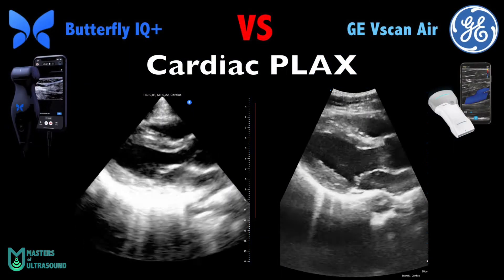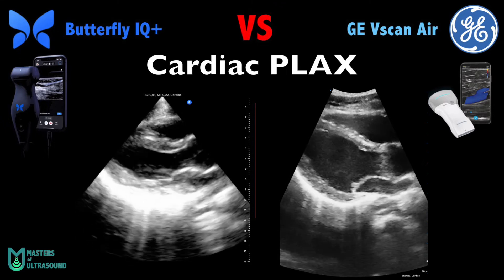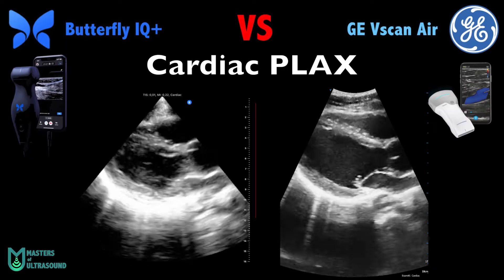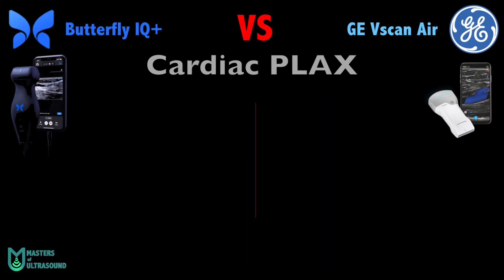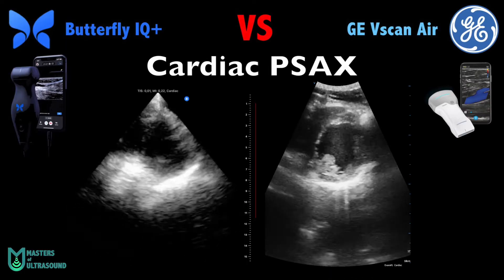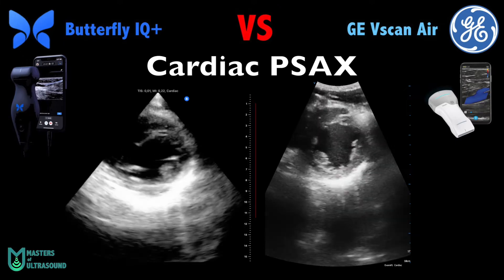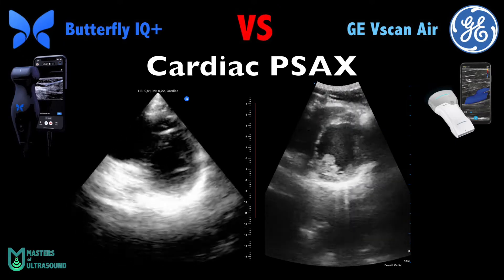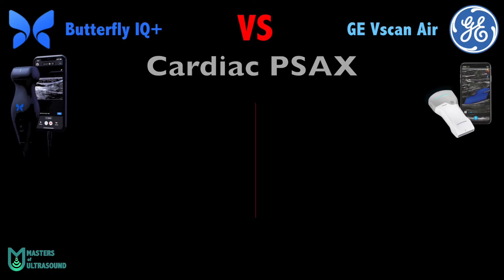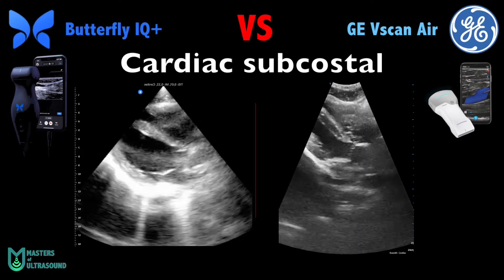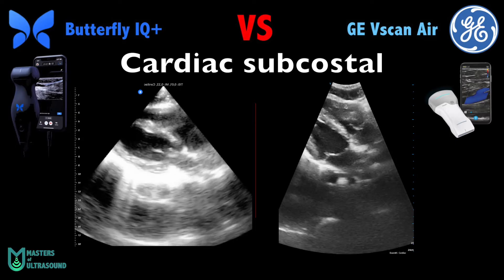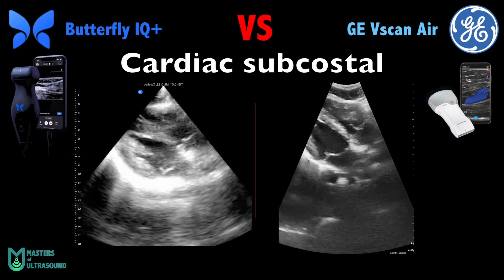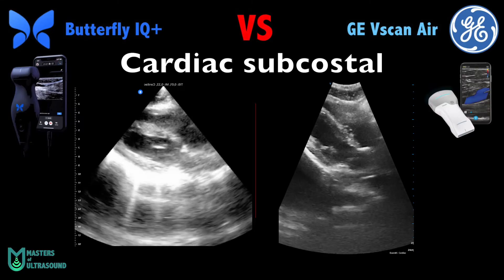Here you can see the cardiac parasternal long axis. As you can see, the V-mode is one of the strong points of the Vscan. Here is the parasternal short axis, and you can see the image has more definition on the Vscan side than the Butterfly IQ side. Here is the subcostal view — the pericardial definition and endocardial borders are better on the Vscan.